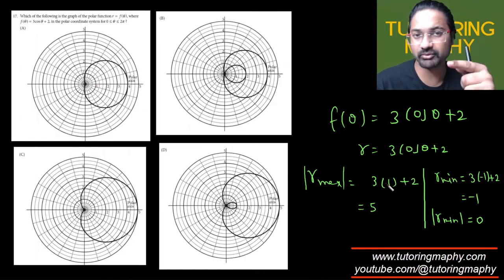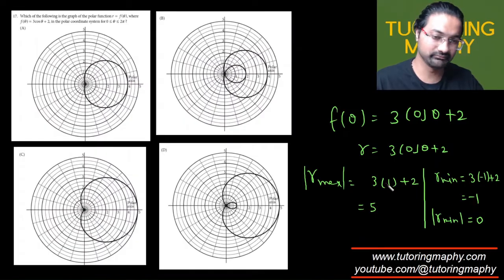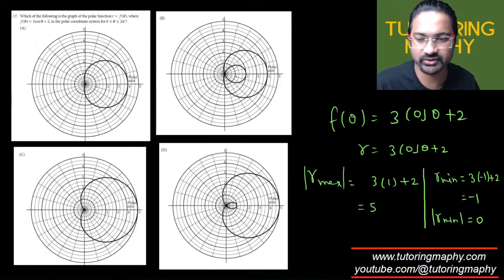If your r minimum is coming negative, then absolute value of r minimum is just 0. Eventually you just have to know that this is how it works.